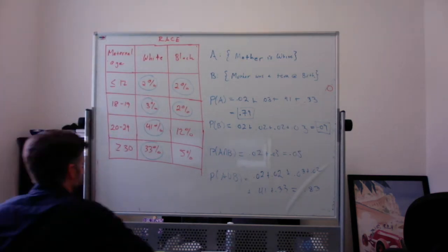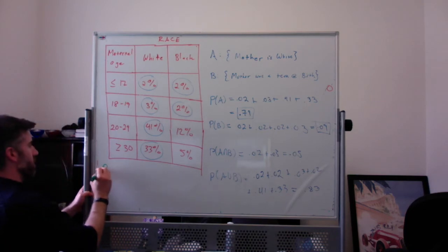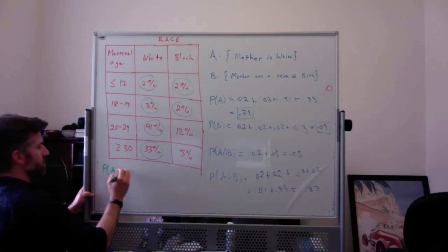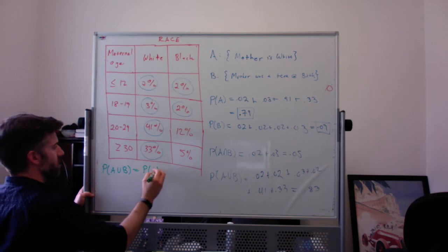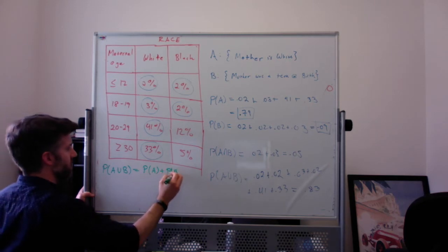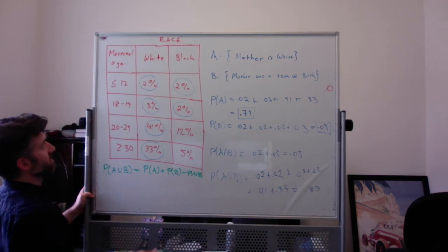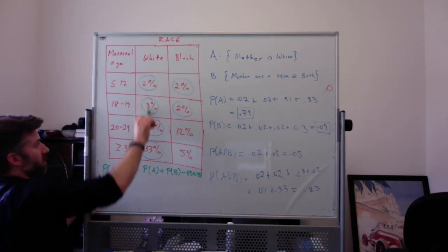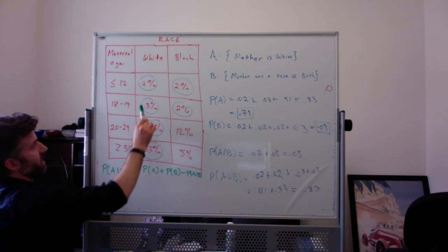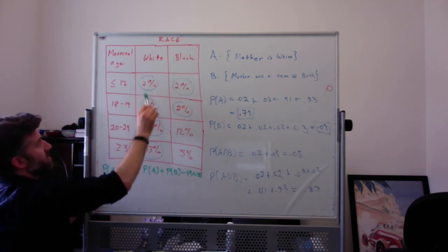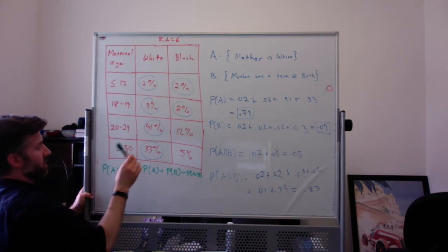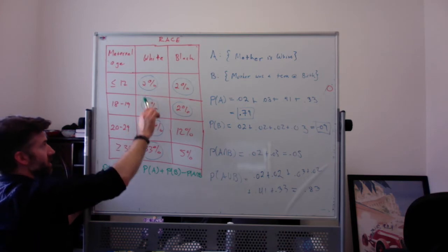So I could say the probability of A union B is the probability of A plus the probability of B minus the probability of A intersect B. Which makes sense. If I do A, that's going to count all of this. If I do B, it's going to count this and this. And these two are getting double-counted. So then we subtract off the intersection, which is exactly these two.